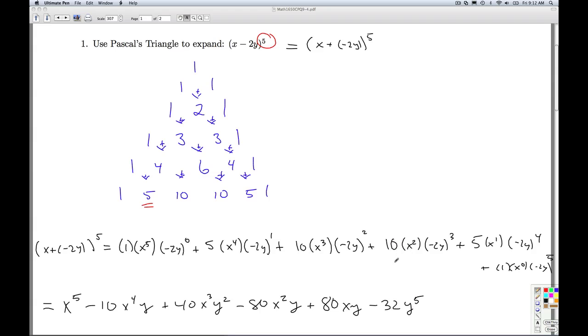So some things to make sure. Number one, you've got to write the subtraction as an addition to get that negative in there. Number two, notice that on each of these terms the exponents always add up to 5. Whoops, which they don't here. I forgot. Do that. So that's a good check.